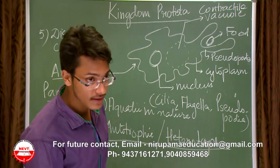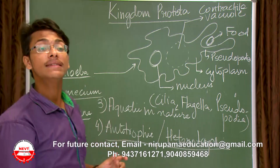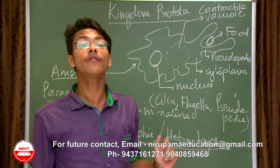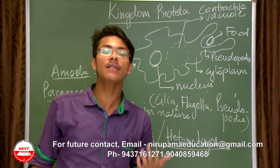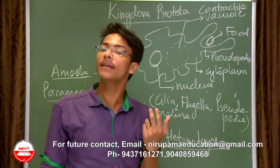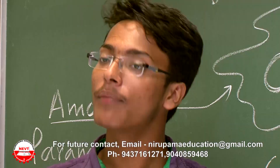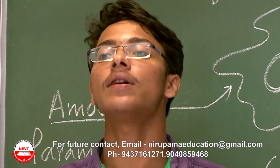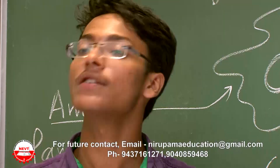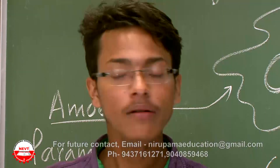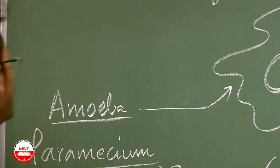The final point under Protista is reproduction. Similar to Monerans, Protista also undergo two types of asexual reproduction, majorly budding and fission.